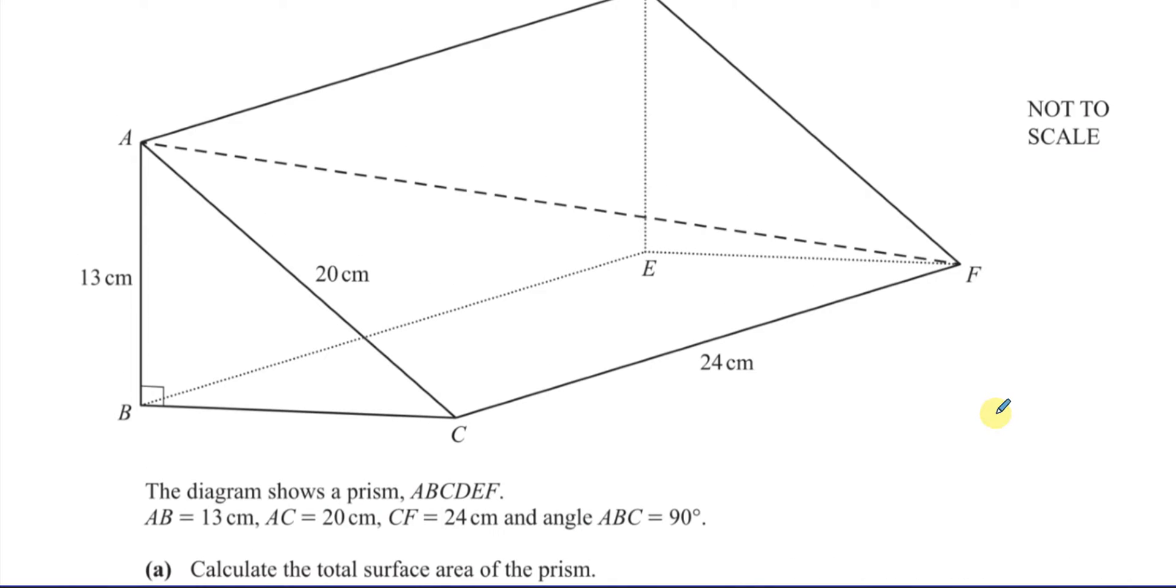So one of the things we need to know to work out the total surface area is we need to know the length BC. We need to have that length in this prism for us to be able to work out the area. That will help us to find the area of this triangle, and of course that will be the same as the triangle behind it, and also to help us to find the area of this base. So we need to know what BC is.